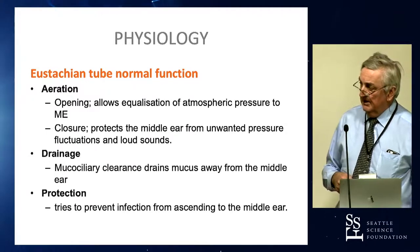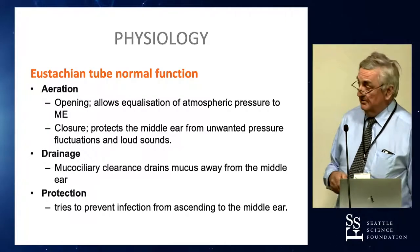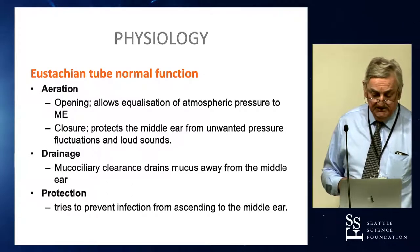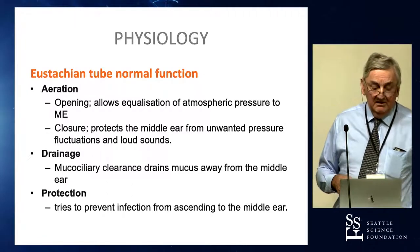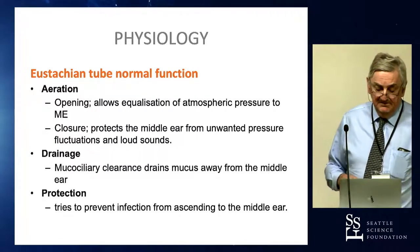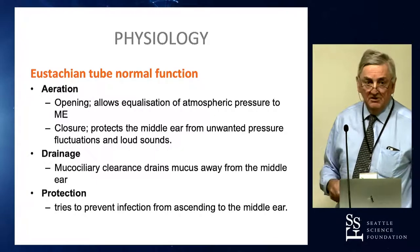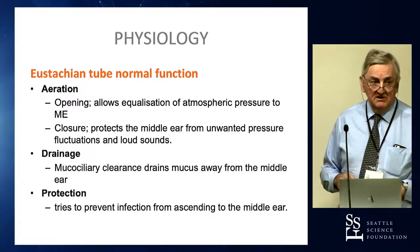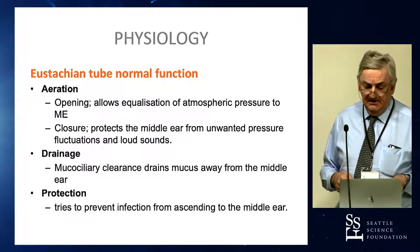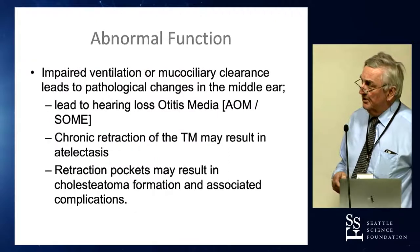Drainage: the middle ear mastoid, like your sinuses, is producing mucus all the time and drains it from the middle ear down into the post-nasal space. And theoretically, in the child, it's well recognized that it doesn't necessarily protect against infections ascending to the middle ear, but has a probably better anatomical process because of the bends in the isthmus.